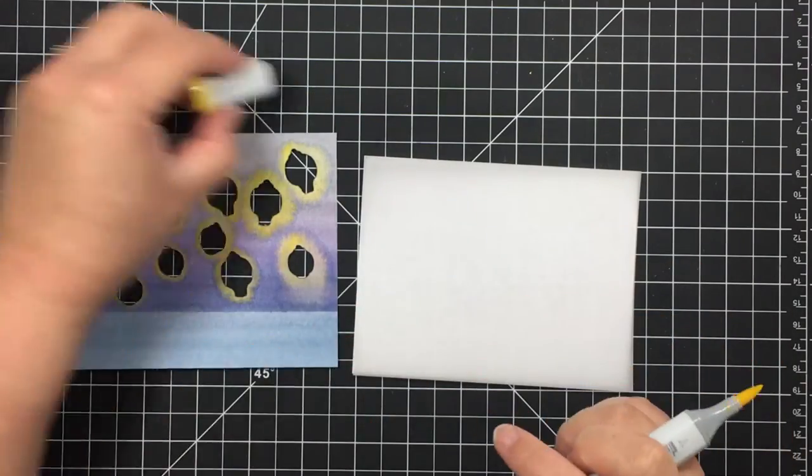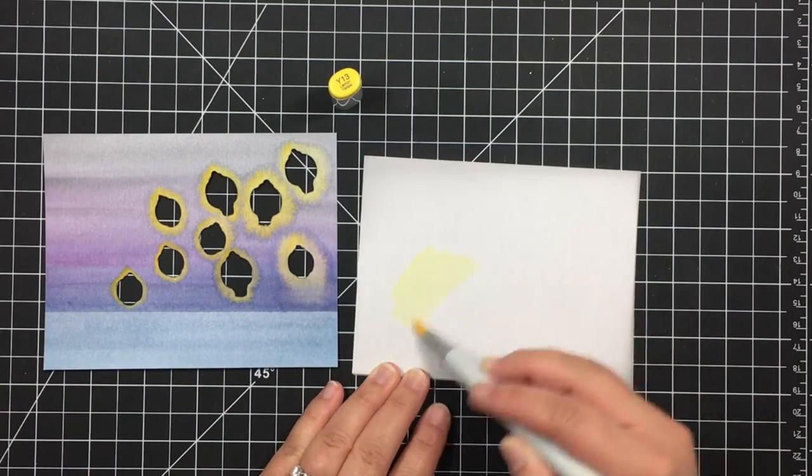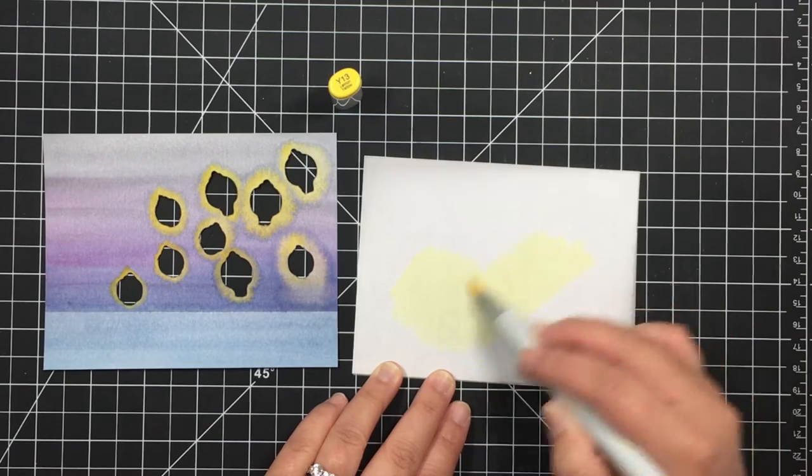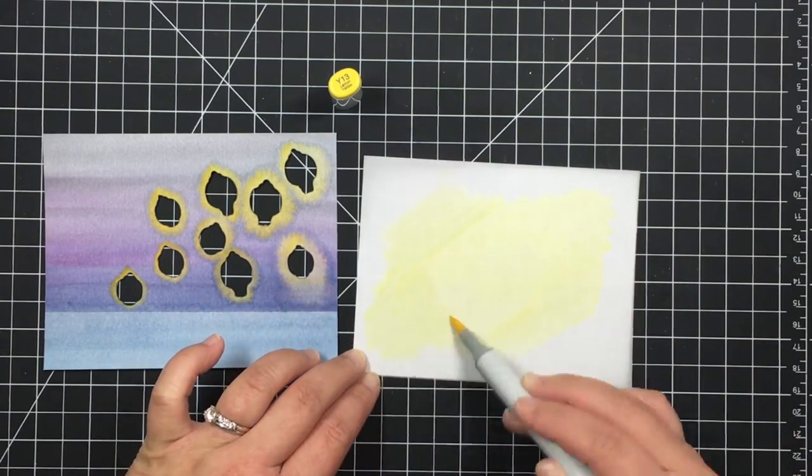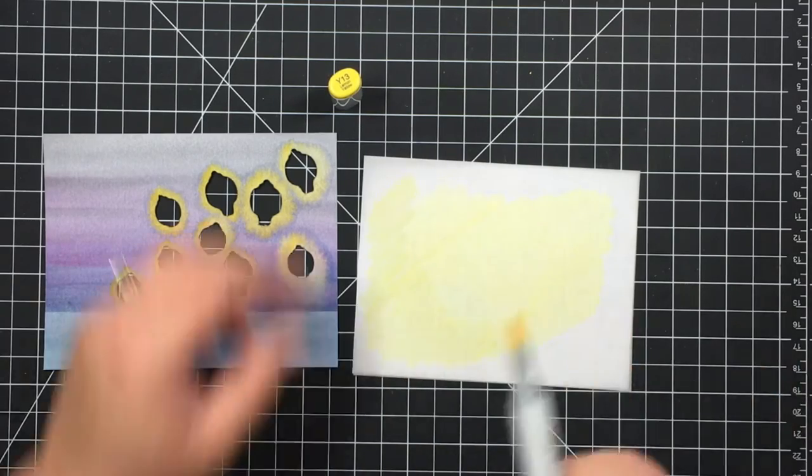Once my watercolor panel is dry I trim it down to an A2 card base. I take a piece of vellum and color it with a Y13 copic marker.